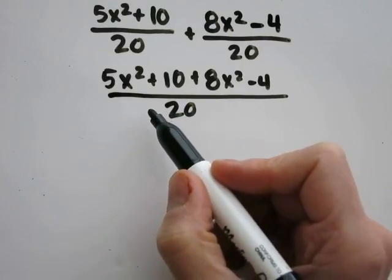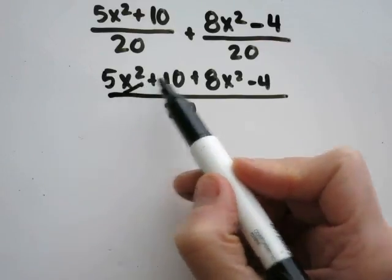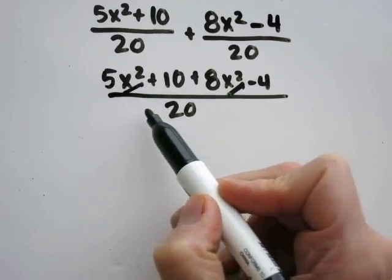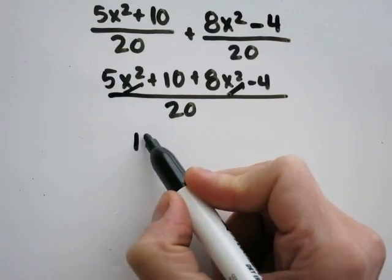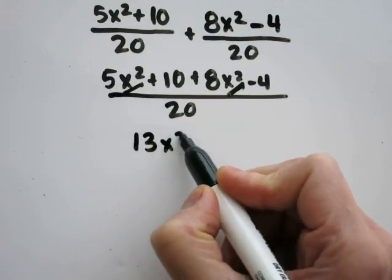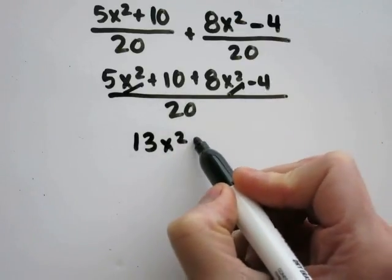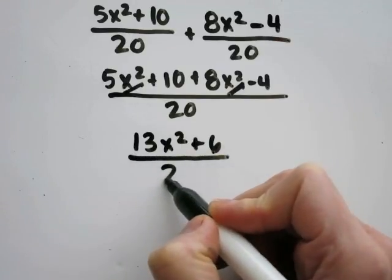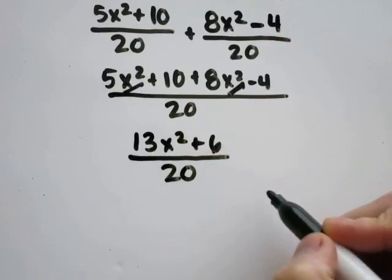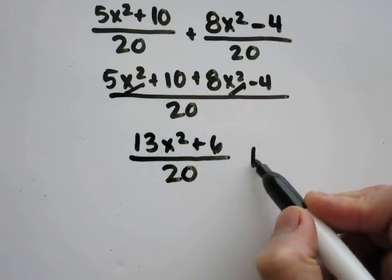Now to simplify the numerator, add the like coefficients of x squared and x squared. Adding the coefficients, 5 plus 8 is 13x squared. 10 minus 4 is 6. This is all over 20. You're left with 13x squared plus 6 over 20, and this is the same as letter D.